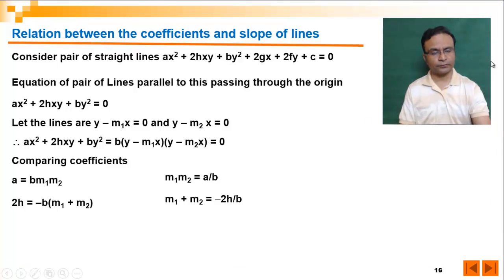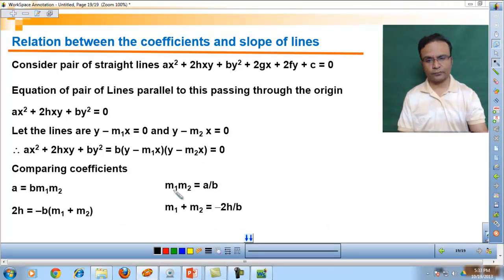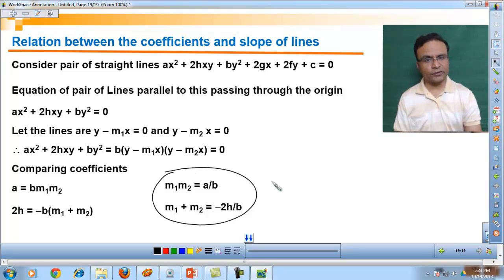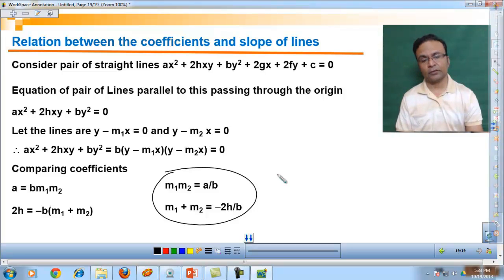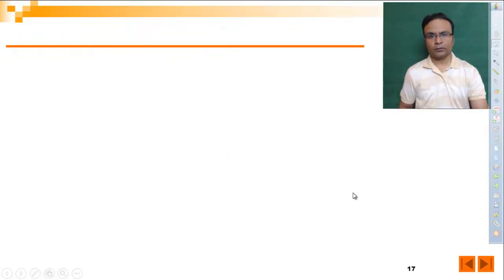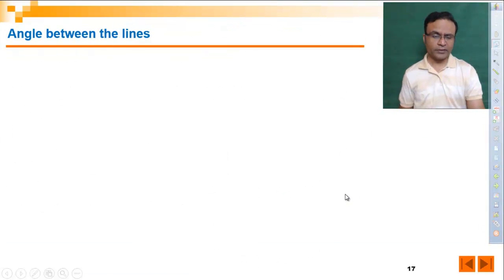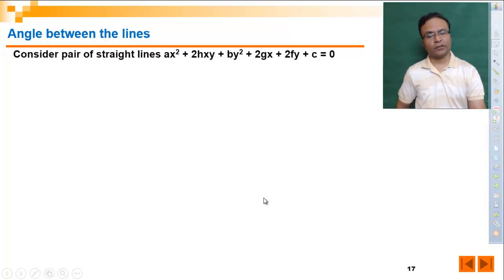From this we get product of m1m2 and sum of m1m2. These two values are very important when we have to find angle between pair of straight lines or we have to find angle bisector of pair of straight lines. Now let's find angle between straight lines. For that again consider general equation of pair of straight lines and consider pair of straight lines which are parallel to these lines.